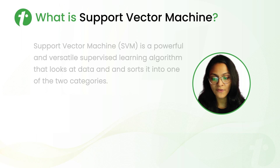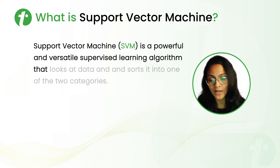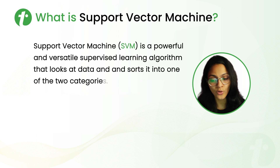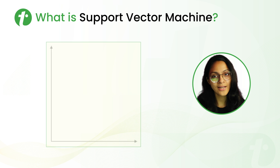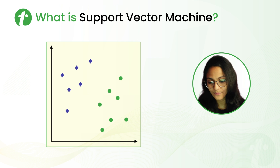From definition, support vector machine is a powerful and versatile supervised algorithm that looks at the data and sorts it into one of two categories. Let's understand this in detail with an example.